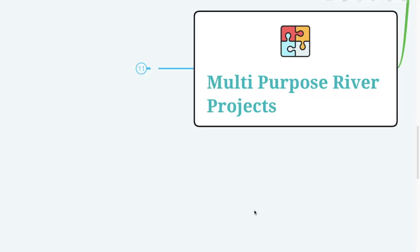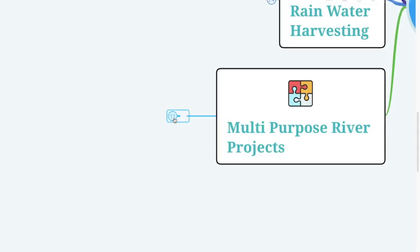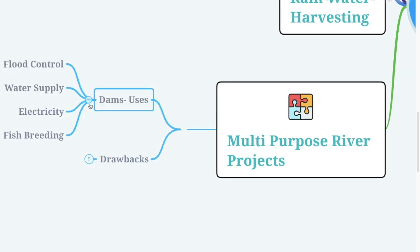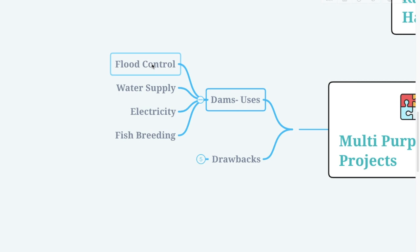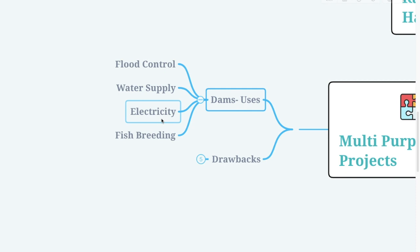In the 11th century, Bhopal Lake, one of the largest artificial lakes of that time, was built. Multi-purpose river projects essentially refer to dams. The uses of dams include flood control, water supply, electricity generation, and they are also a great place for fish breeding.